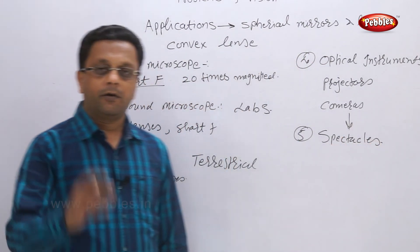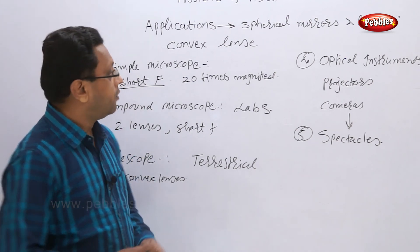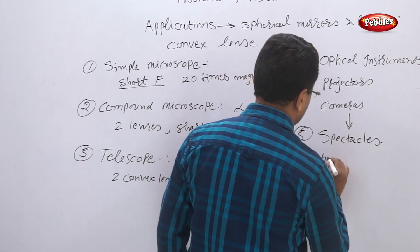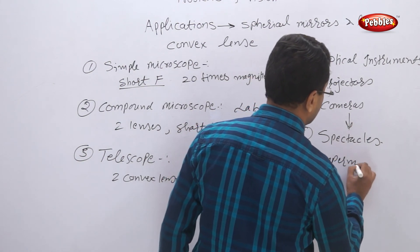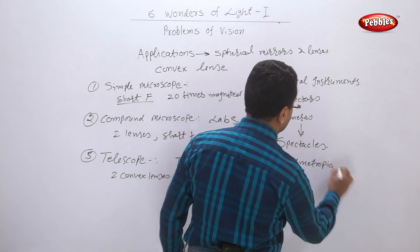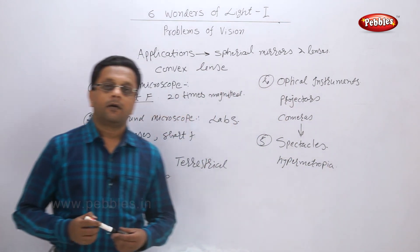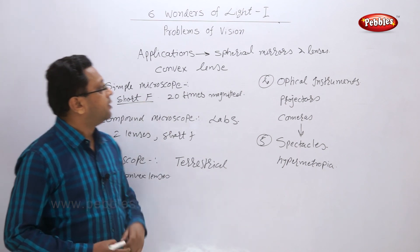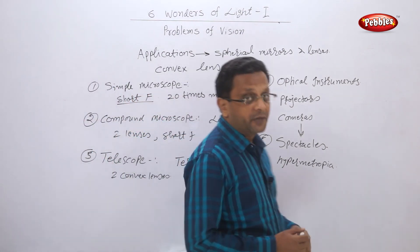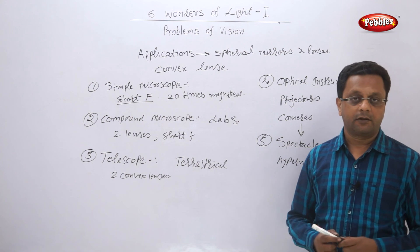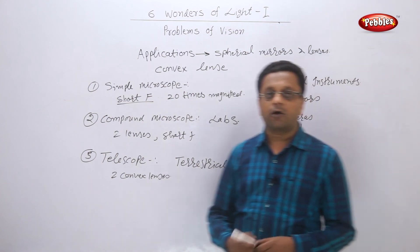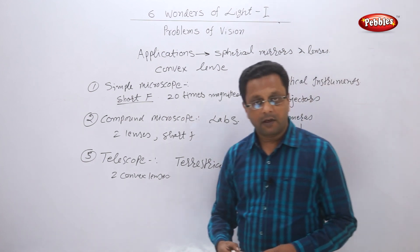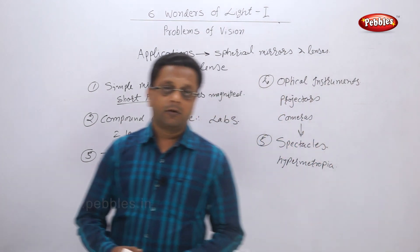The last application is spectacles. As we have seen earlier, a convex lens is used in spectacles to correct hypermetropia. These were the applications of spherical mirrors and lenses, and with this we finish the topic of Wonders of Light Part 1.